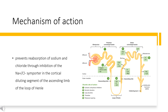Mechanism of Action: Chlorthalidone prevents reabsorption of sodium and chloride through inhibition of the Na+/Cl- symporter in the cortical diluting segment of the ascending limb of the loop of Henle. Reduction of sodium reabsorption subsequently reduces extracellular fluid and plasma volume via an osmotic sodium-driven diuresis.